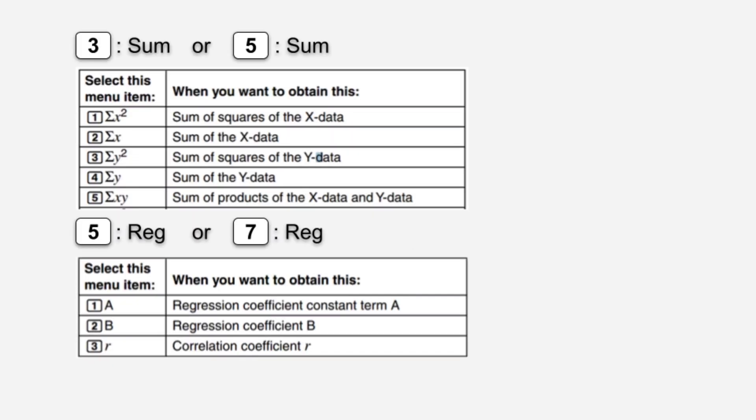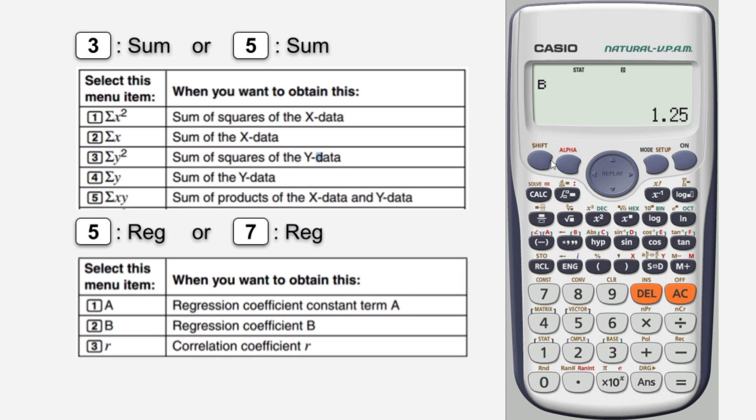To find coefficient A using calculator, press SHIFT 1, press 5 or 7, press 1, then press equals to get the value.